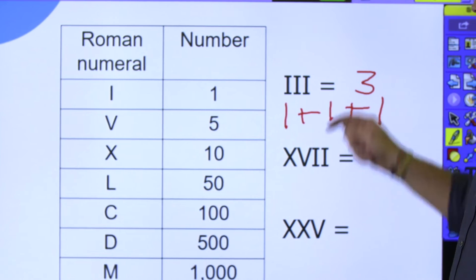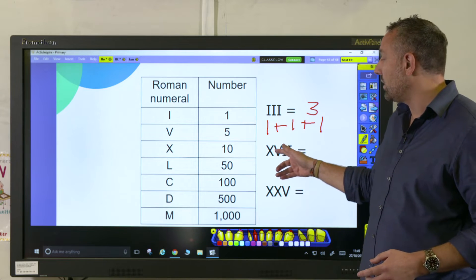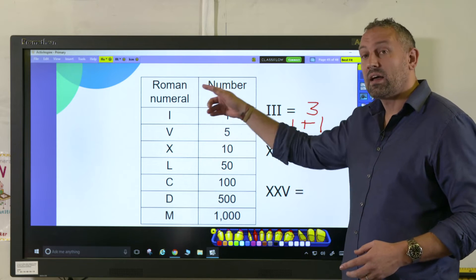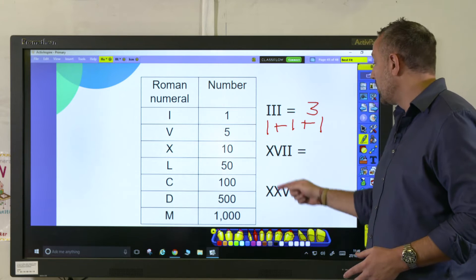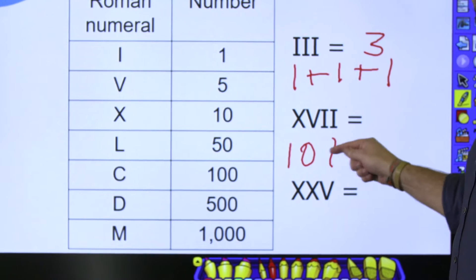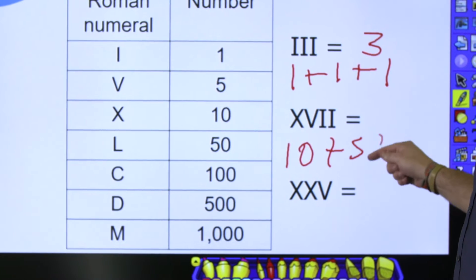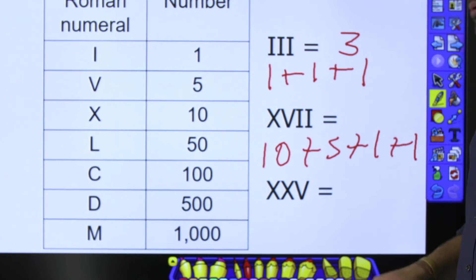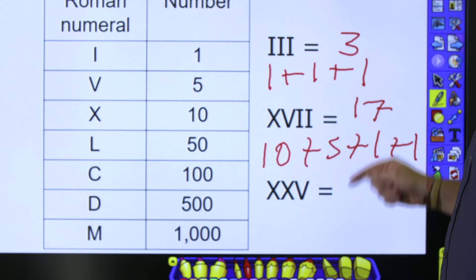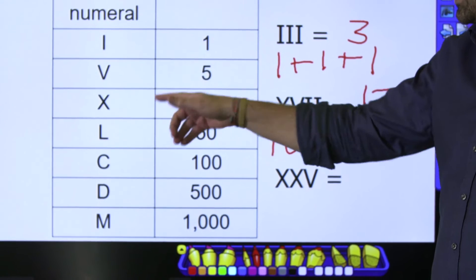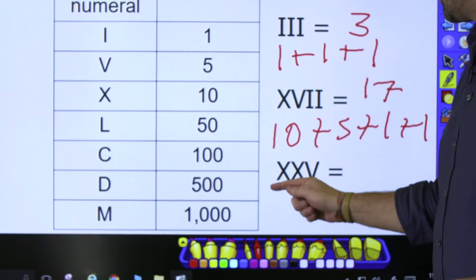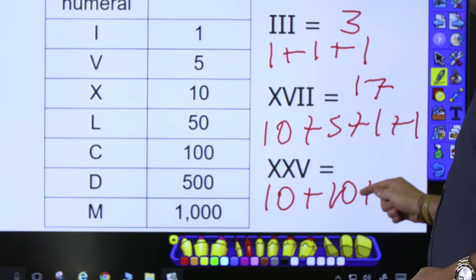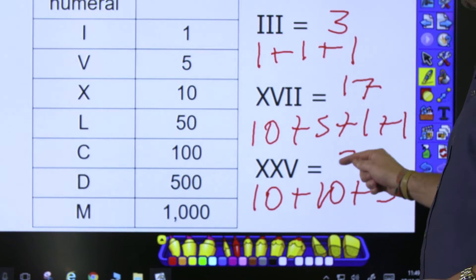Here you have X add V add I add I, which is 10 add 5 add 1 add 1, which is 17. And here you have X, X, V — which is 10 add 10 add 5 — which is 25.